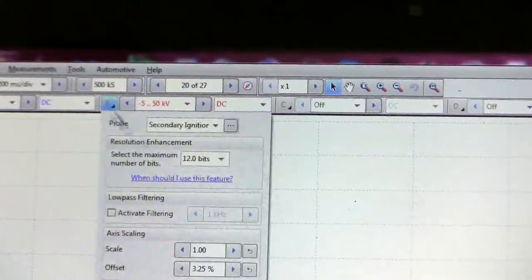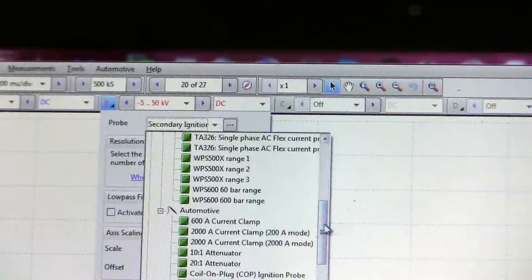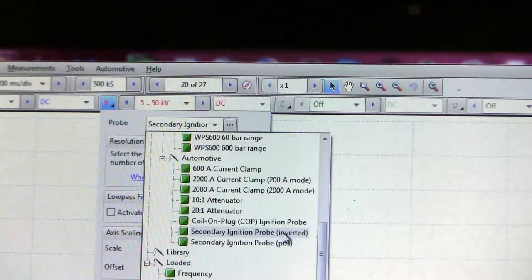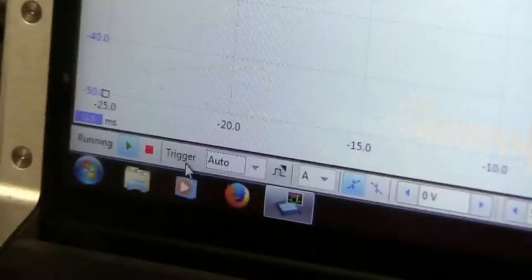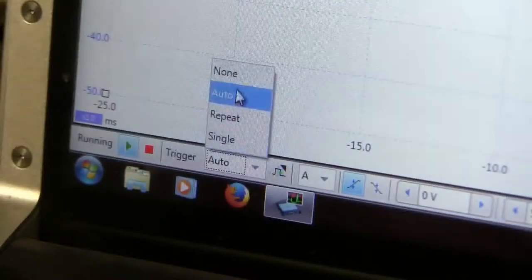Now to set up channel B, I've chosen the secondary ignition probe inverted, and make sure you turn it on. And down here I've chosen to trigger with none so that the screens roll through and I can pick out the best one later.